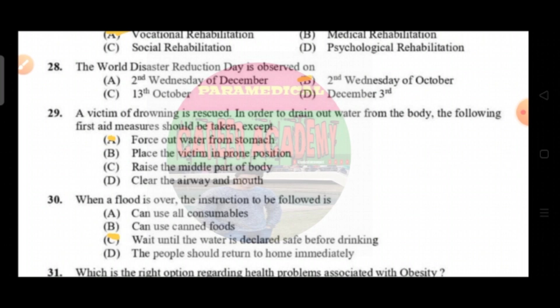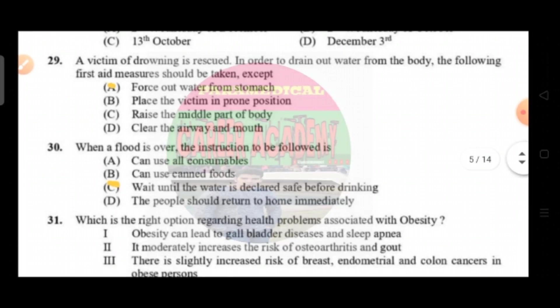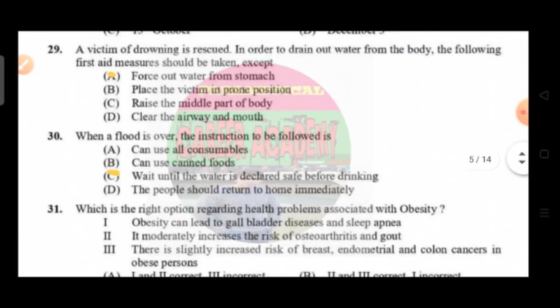Question number 28: the World Disaster Reduction Day is observed on — option A second Wednesday of December, option B second Wednesday of October, option C 13th October, option D third of December. The correct answer is option B. Question number 29: a victim of drowning is rescued. In order to drain out water from the body, the following first aid measures should be taken except — option A force out water from stomach, option B place the victim in prone position, option C raise the middle part of body, option D clear the airway and mouth. The correct answer is option A — force out water from stomach.